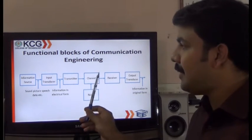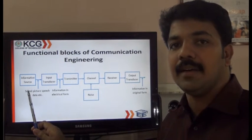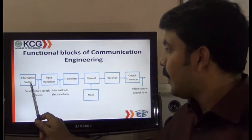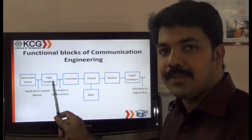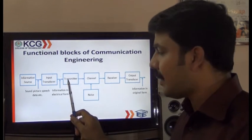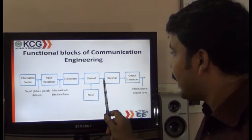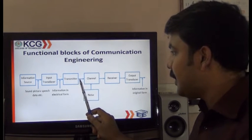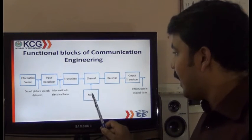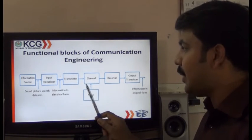Next are the functional blocks of communication engineering. The first block is the information source, which may be any signal — an audio signal, a video, or a document we want to transmit to the receiver. We use an input transducer, which converts the information into the respective electrical signals. Then we use a transmitter for transmitting these electrical signals to the receiving side. For transmitting the signal, we use a channel from the transmitter to the receiver, which may be a wired or wireless medium.